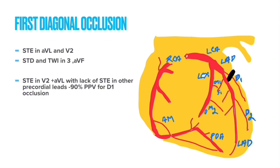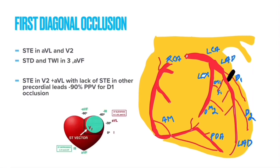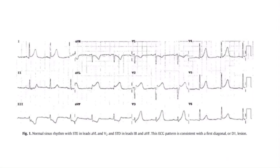Here we can see this is the first diagonal branch which is blocked in this ECG. When D1 is occluded, the ST vector goes towards lead V2, lead AVL, and lead I, and also towards the negative poles of leads III and AVF. So there will be ST elevation in V2, AVL, and sometimes in lead I, and ST depression in leads III and AVF. The key finding is definitively ST elevation in lead V2 and AVL with ST depression in lead III — this pattern indicates D1 occlusion.